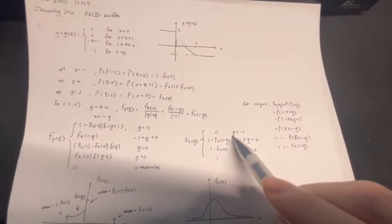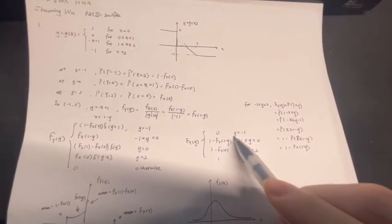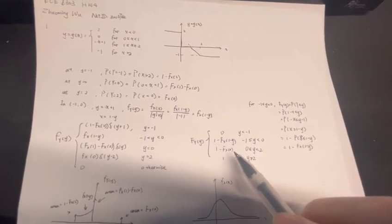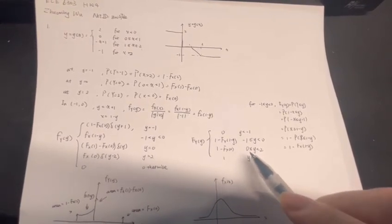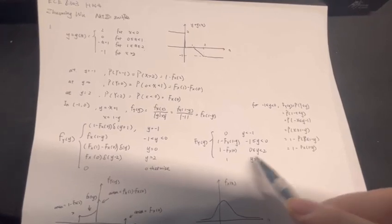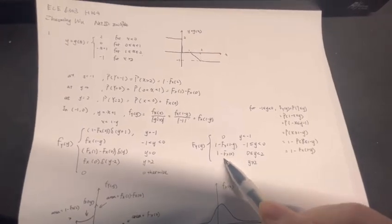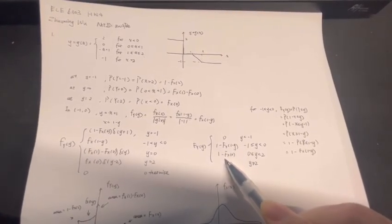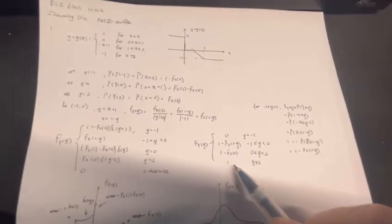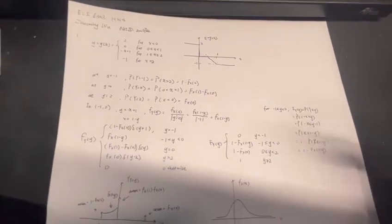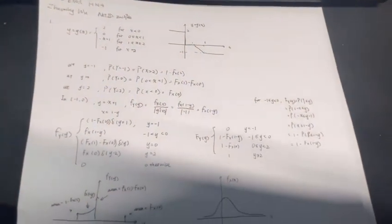For the complete F_Y(y): when y is less than negative one it equals zero; when y is between zero and two it equals one minus F_X(0); and when y is greater than two it equals one.